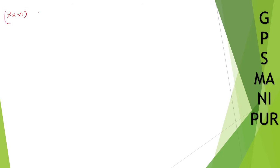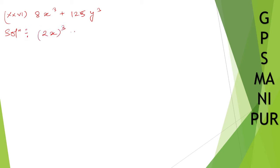Let me write down the equation: 8x cubed plus 125y cubed. For the solution, 8x cubed I can write as (2x) whole cube, plus 125y cubed I can write as (5y) whole cube. So this is of the form A cubed plus B cubed.